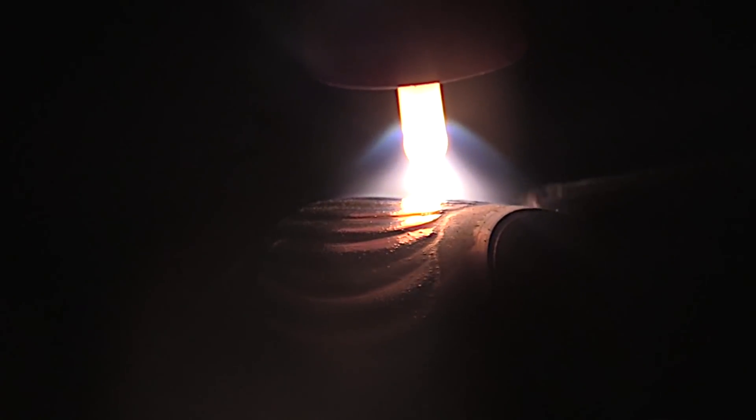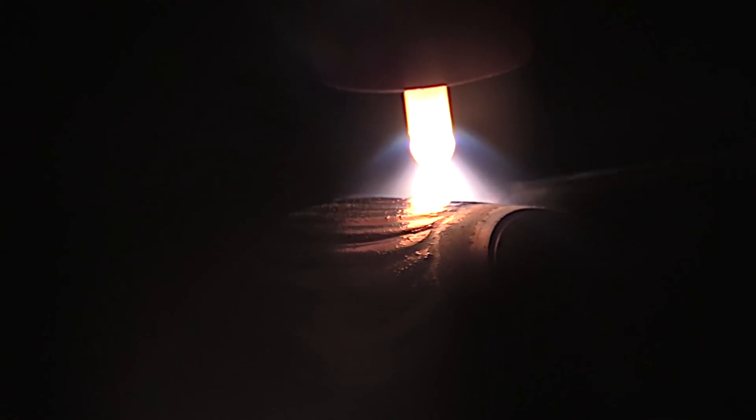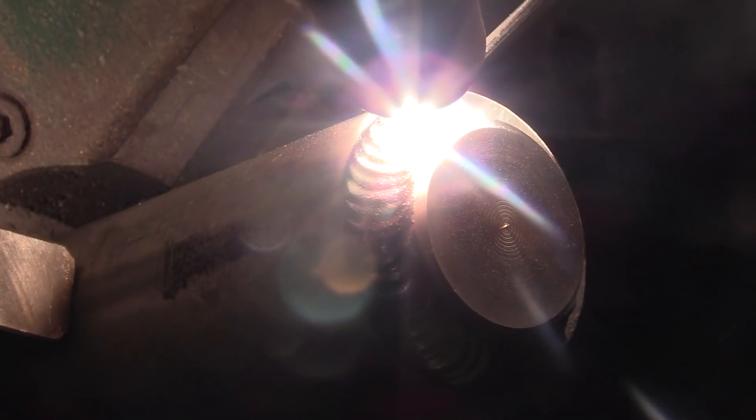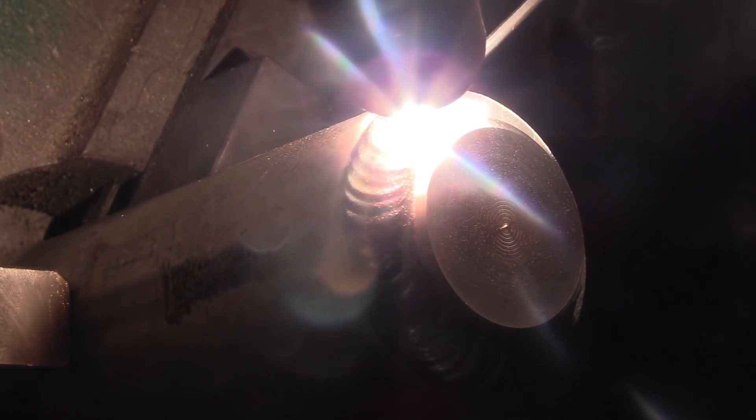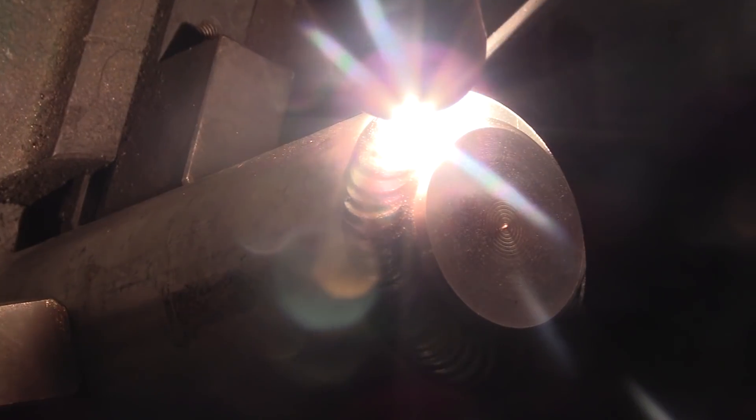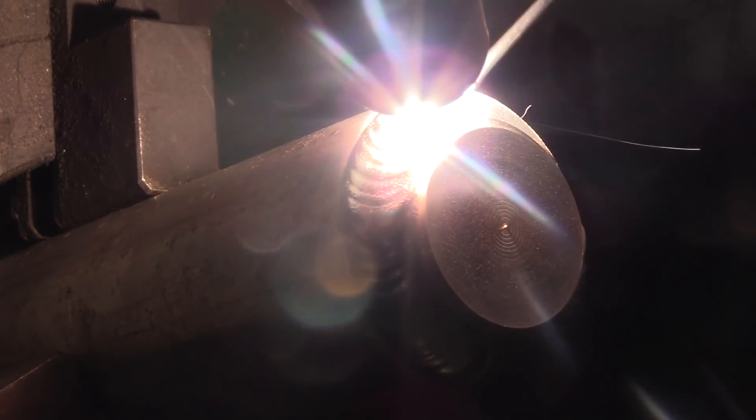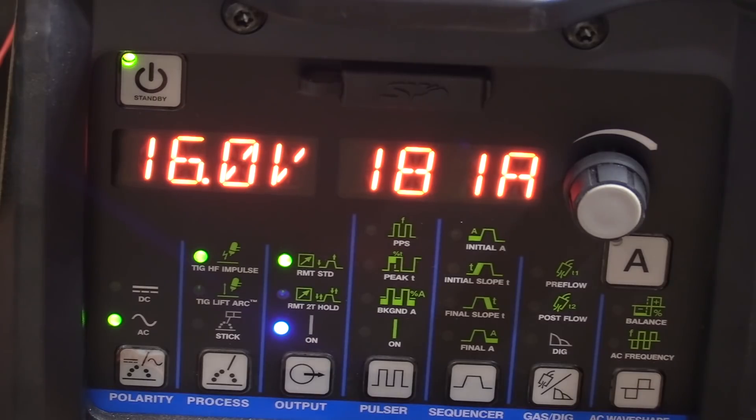You can see how that arc cone is just fanning out there. The main thing I like to see on aluminum is a clean puddle, free from black spots, which would mean I either don't have enough argon coverage, the metal's not clean enough, or I don't have enough cleaning action.